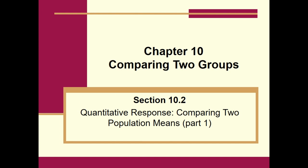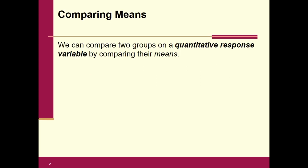A lot of the problems we've been doing have been looking at, say, all University of Akron students. But if someone wanted to separate that into two groups — males and females — we're going to separate it into two distinct populations. Basically, we can compare the two groups on a quantitative response variable by comparing their means.